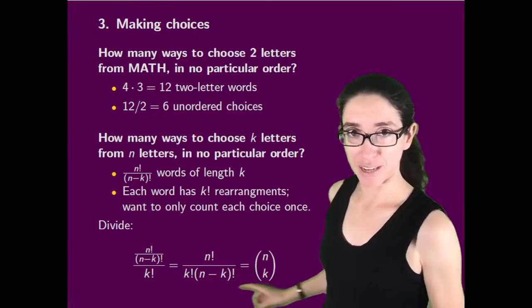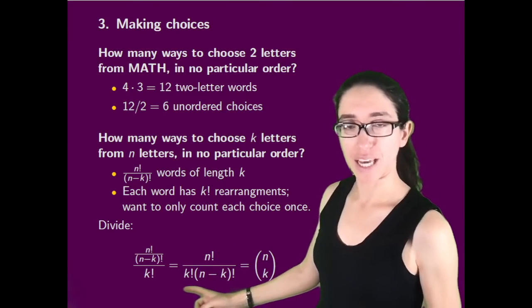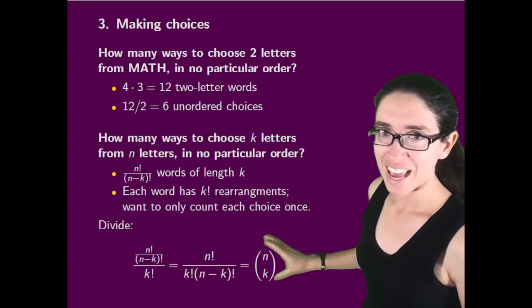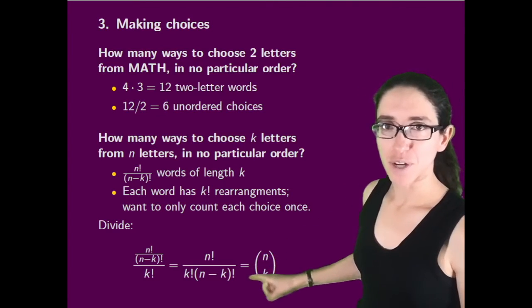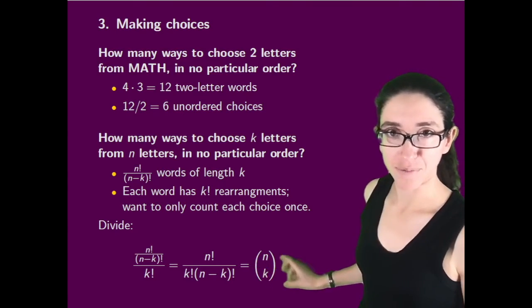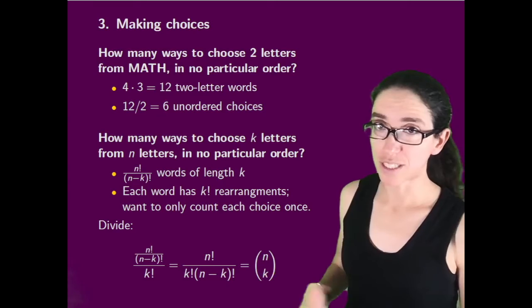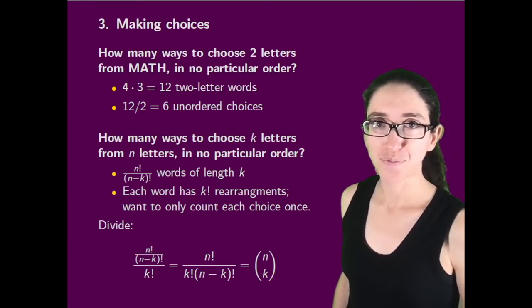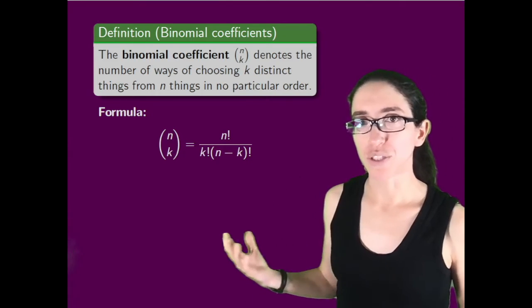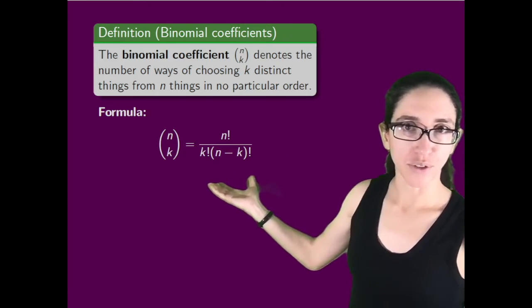In general, if we want to choose k things from n things, there's n!/(n-k)! words of length k, and each word has k! rearrangements. So we over-counted by a factor of k factorial. We divide by k factorial and get this famous formula: n! divided by k!(n-k)!. This is so famous it has its own symbol: n choose k. You write parentheses, you write the n on top, you write the k on the bottom. You do not put a line between them, it's not a fraction. It's just a symbol, pronounce it as n choose k, and it's sometimes called a binomial coefficient.